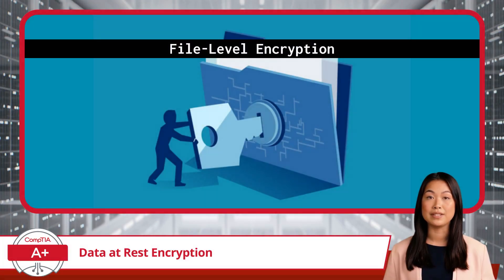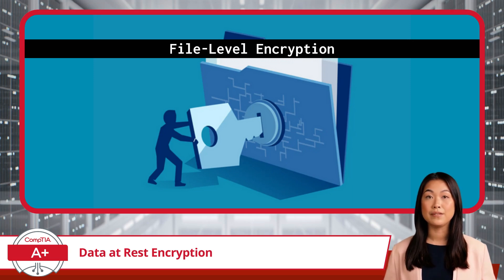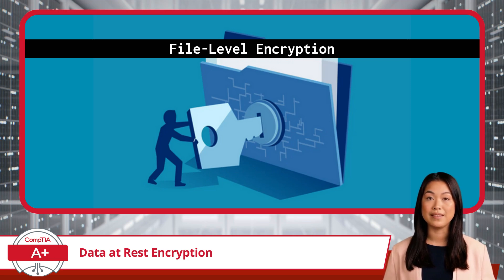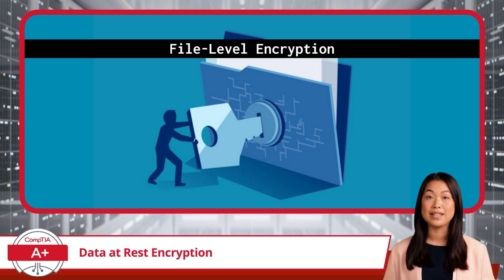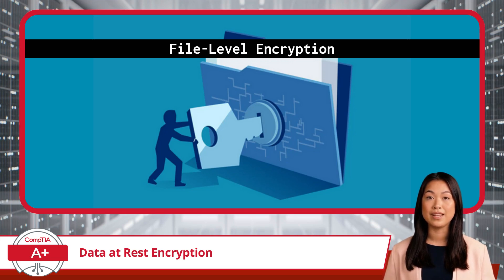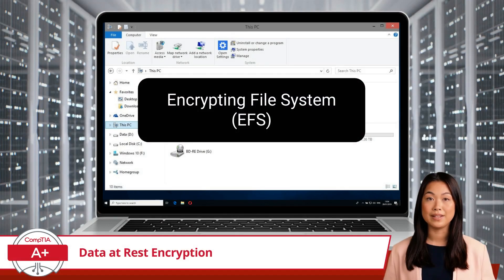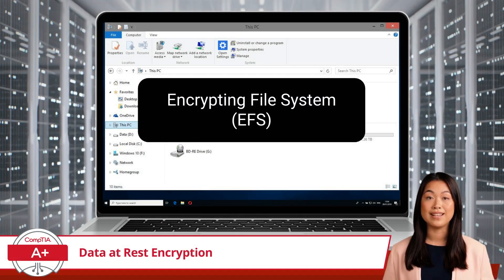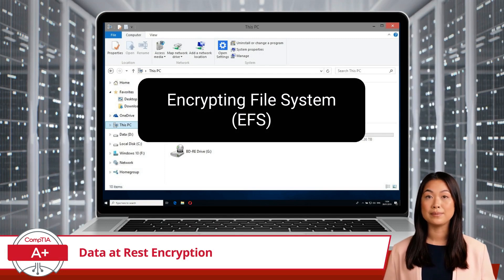The first type of data at REST encryption we will discuss is file-level encryption, additionally referred to as file-based encryption or file-folder encryption. This method is distinct in its approach to data protection. Instead of encrypting an entire storage medium or device, file-level encryption zeros in on individual files or directories, encrypting them directly through the file system. One commonly used tool for this type of encryption is Encrypting File System, which is built into Windows.